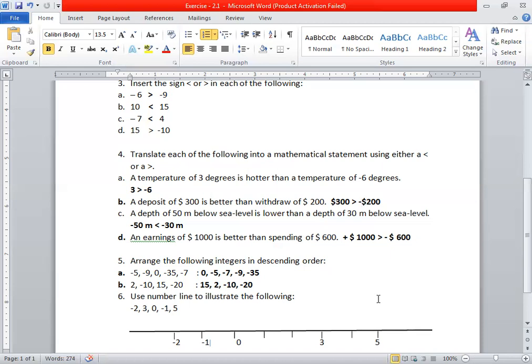An earning of $1000 is better than spending of $600. Put a minus sign with the $600, so $1000 greater than minus $600. Now arrange the following integers in descending order.